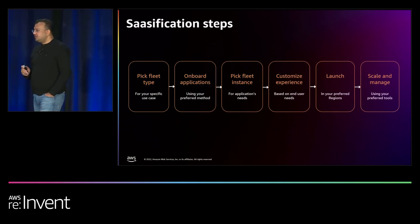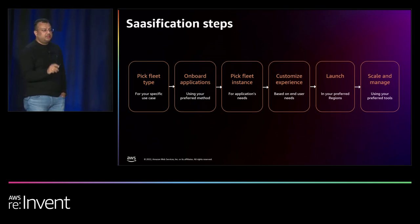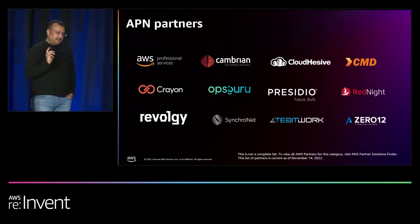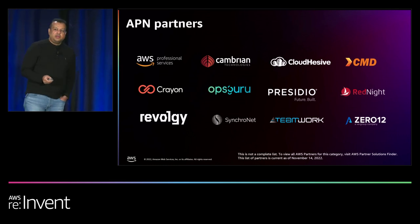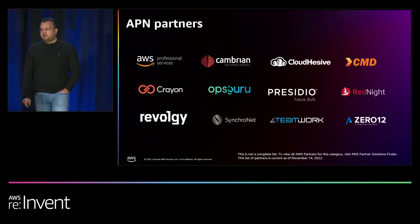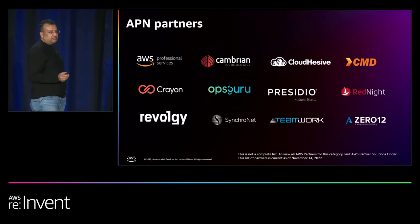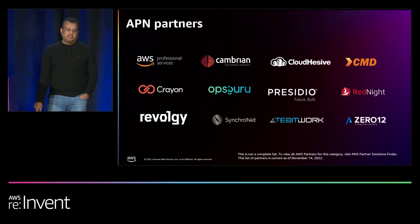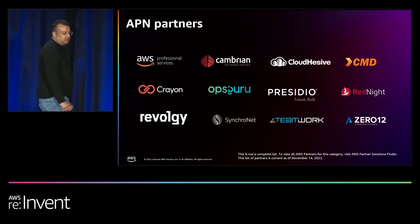These are the six SaaS conversion steps. If you look deeper, all of them are around your knowledge of your application, your use case, and your business. Once you bring that knowledge, these steps are really simple and enable you to move really fast. You're not alone — the service is here to help, and we have a wide array of AWS partner network options: Synchronet Cloud and Hesif in North America, Camber and Crayon in Europe, CMD in Asia Pacific, and AWS Professional Services — all specializing in SaaS conversion.